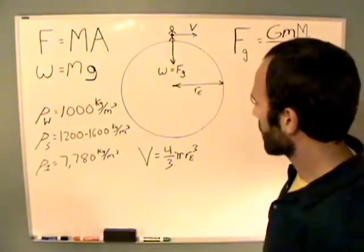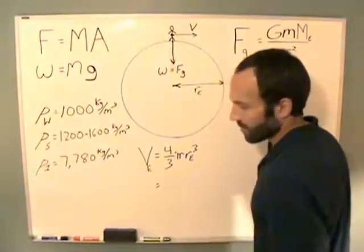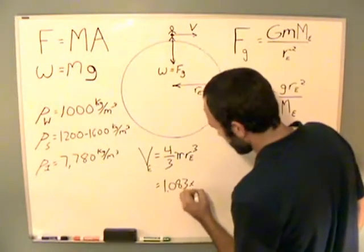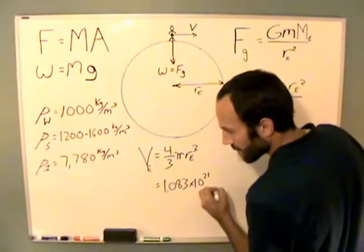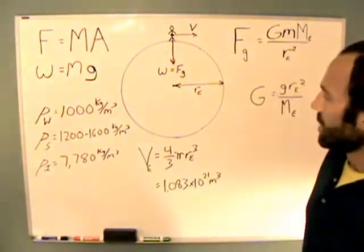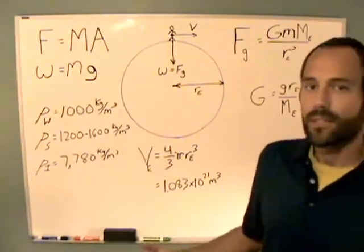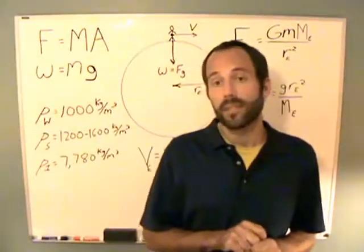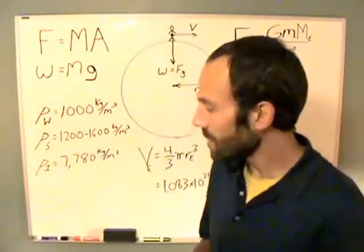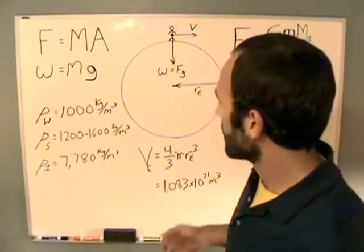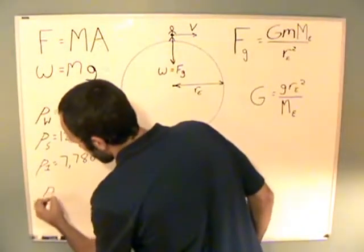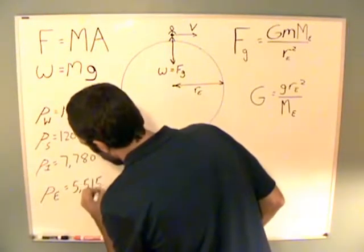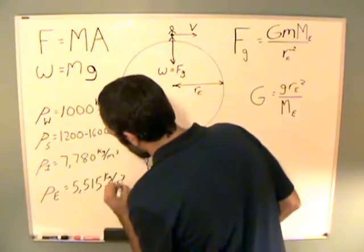Based on the volume of Earth, VE, the volume of Earth is actually 1.083 times 10 to the 21 meters cubed. If you use NASA's fact sheet with their mass of Earth, which is 5.9726 times 10 to the 24th kilograms, and you divide that by the volume of Earth, you will get an average density of Earth, rho E, of 5,515 kilograms per meter cubed.